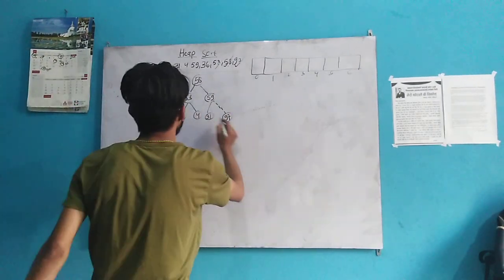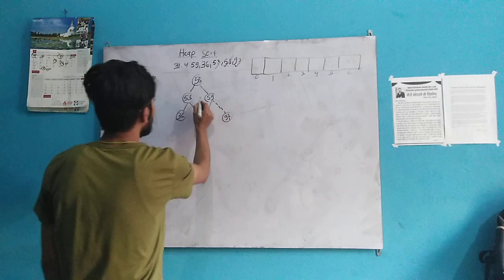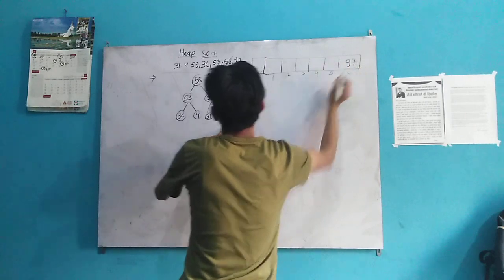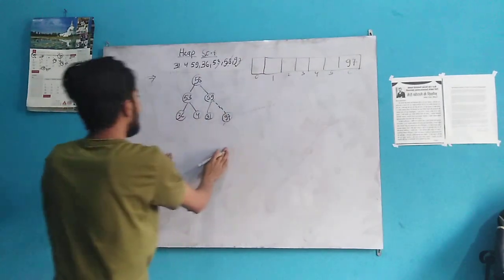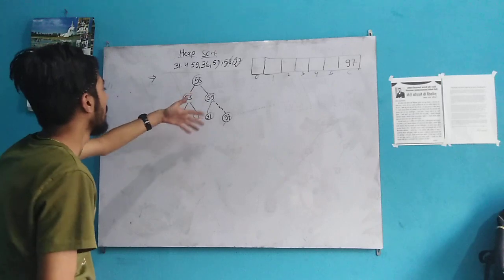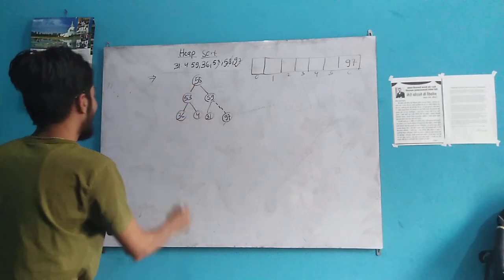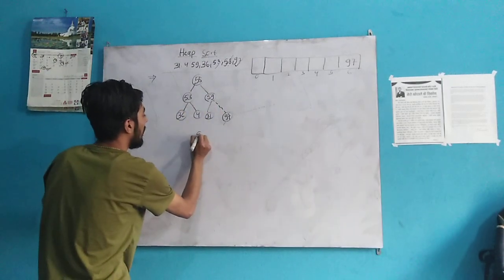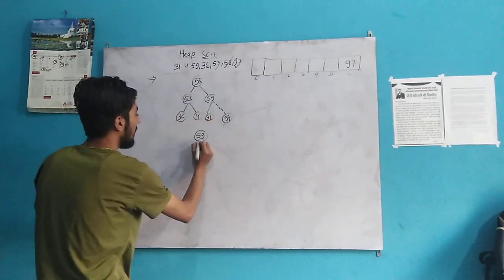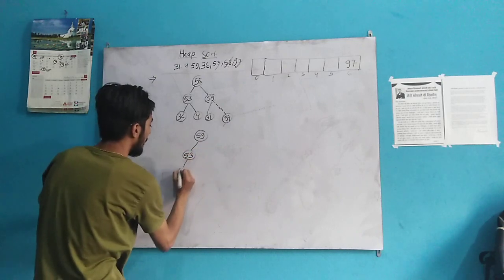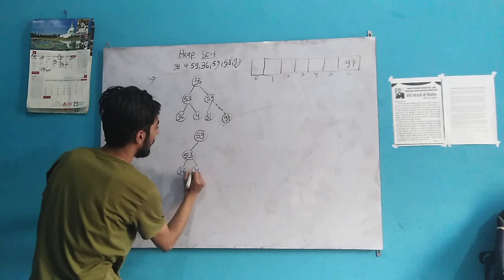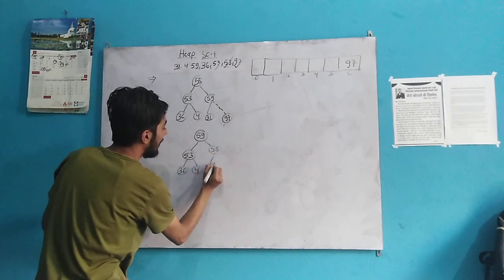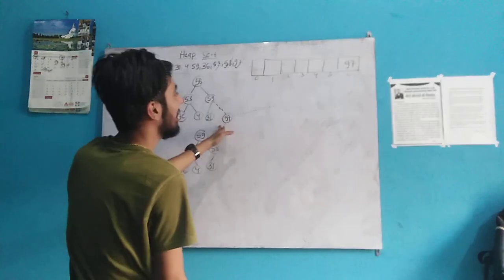We get the result after swapping. We write 97 in the last position as the sorted element. Now after this swap, the tree is not a maximum heap, so we must first make it a maximum heap again. After heapifying, what comes is 59 at root, and we swap accordingly: 53, 36, 4, 58, and 31. We don't include 97 because 97 is already deleted from the heap.